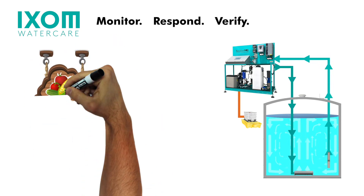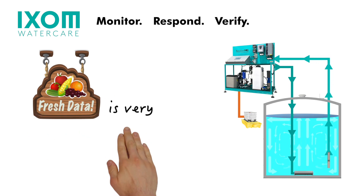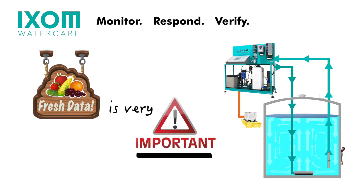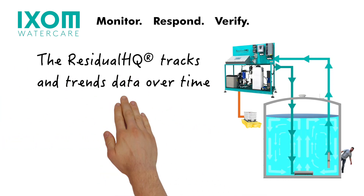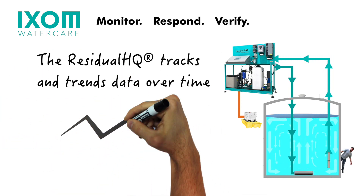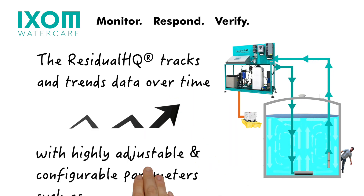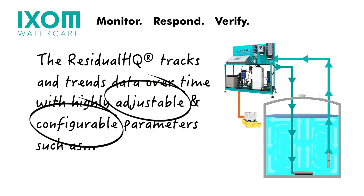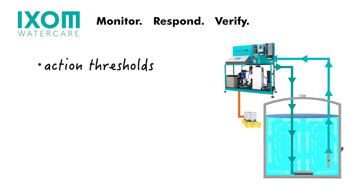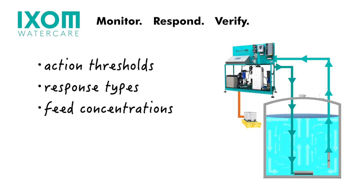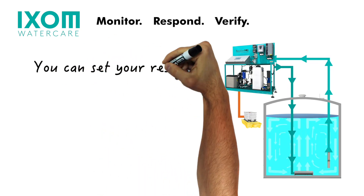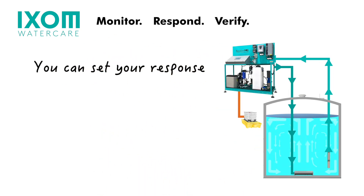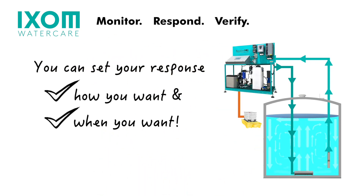A good response requires good information, and data freshness is very important. The Residual HQ tracks and trends disinfectant residuals over time, and incorporates highly adjustable and configurable parameters, such as action thresholds, response types, feed concentrations and ratios, plus more. This gives you the ability to set your response how you want and when you want.